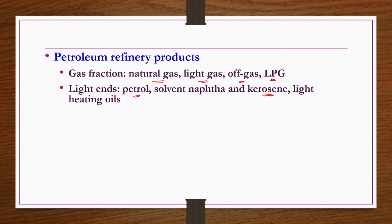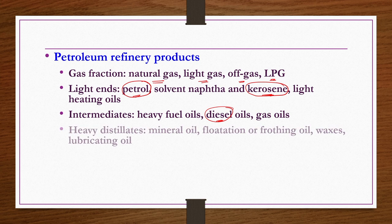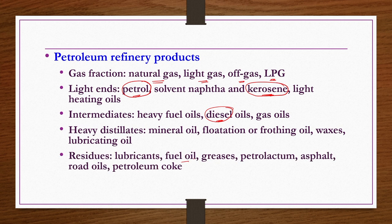Intermediates include heavy fuels, diesel oils, and gas oils. We mostly come across petrol, kerosene, and diesel in daily life — diesel is an intermediate while petrol and kerosene are light ends. Heavy distillates include mineral oil, flotation oils, waxes, and lubricating oils. Residues include lubricants, fuel oil, greases, petrolatum, asphalt, road oils, and petroleum coke. Some byproducts include ammonia, detergents, sulfur and their derivatives.